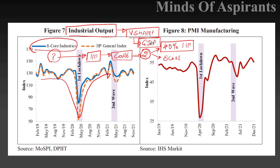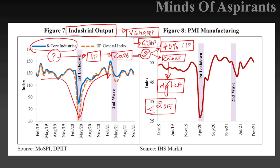These two questions were asked before 2015. I'm not sure whether they will be repeated, but the key point is that industries have actually rebounded in a V-shaped fashion. The next thing to look at is the PMI Manufacturing — the Purchasing Manager Index.